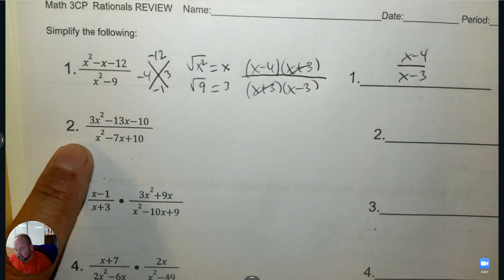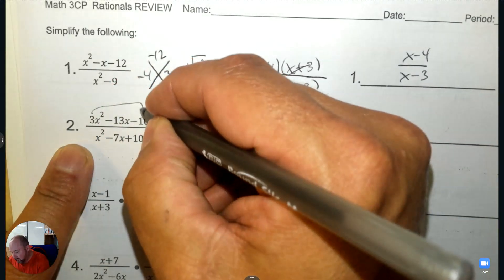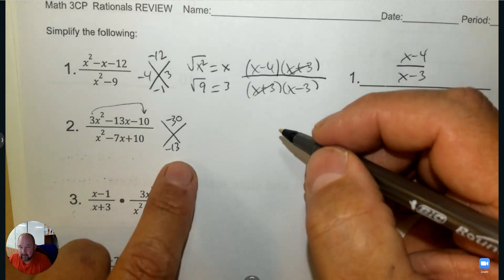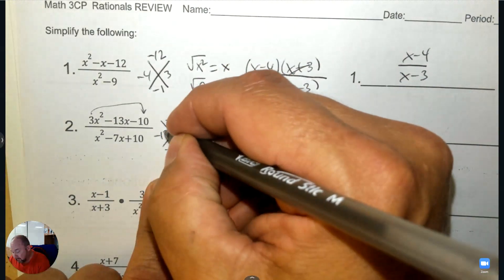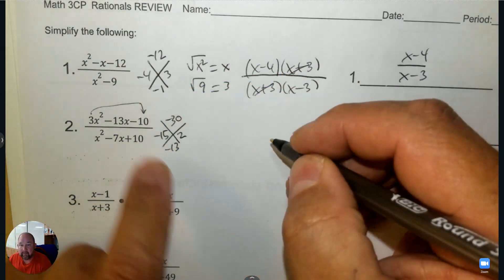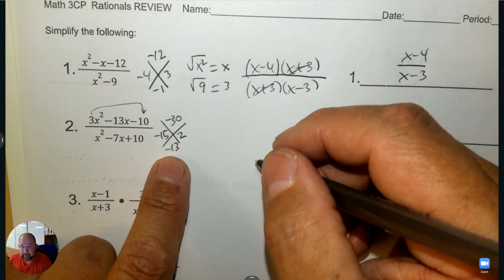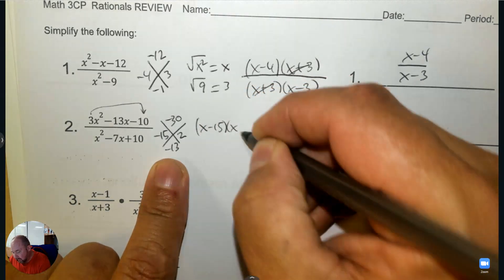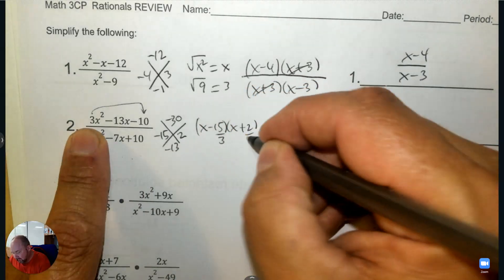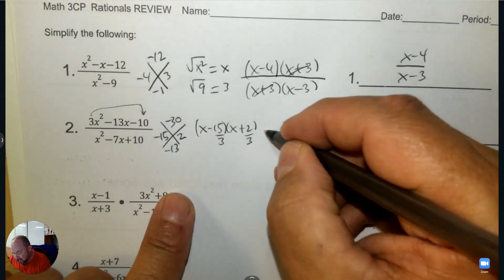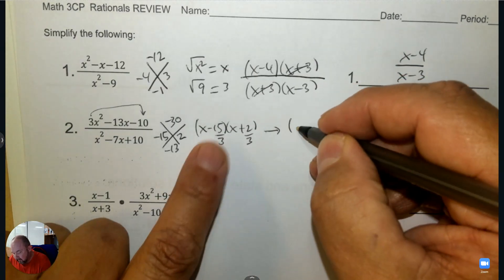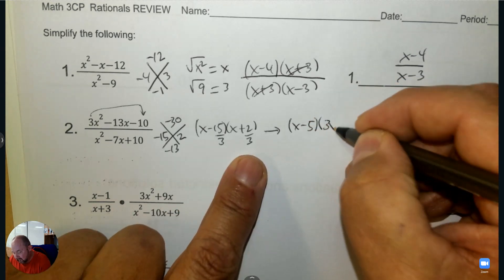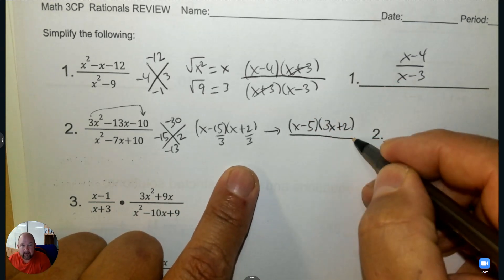Let's try this one. Again, a diamond on top. 3 times negative 10 is negative 30, and negative 13. Find the numbers that match — two numbers that multiply to negative 30 and add to negative 13. When I write negative 5 and 2, I've got to divide by 3. So I can't forget to divide and then slide.